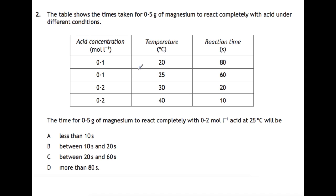Question 2. The table shows the times taken for 0.5 grams of magnesium to react completely with acid under different conditions. The time for 0.5 grams of magnesium to react completely with 0.2 moles per litre acid at 25 degrees C will be what? So your 0.2 mole per litre is going to react faster than the 0.1 mole per litre did at 25 degrees C, but it's not going to react as fast as the 0.2 at 30 degrees C did, so it's going to lie somewhere between these two times. So it will be faster than 60 seconds, but slower than 20, so it will be C between 20 and 60 seconds.